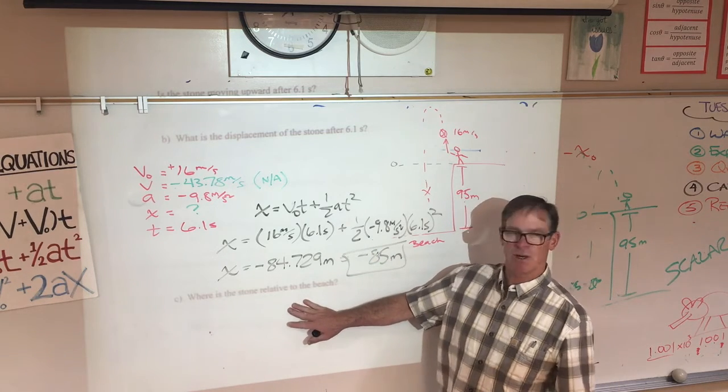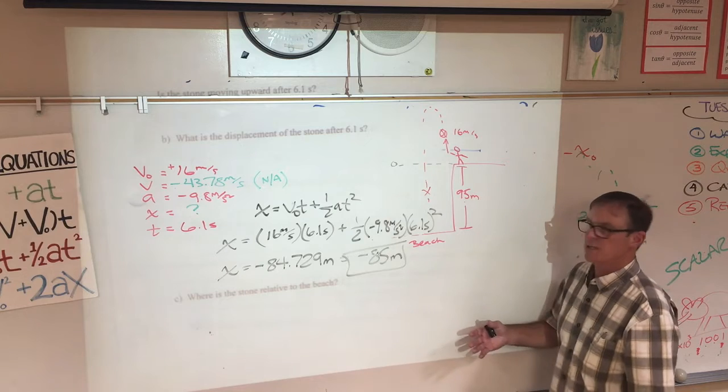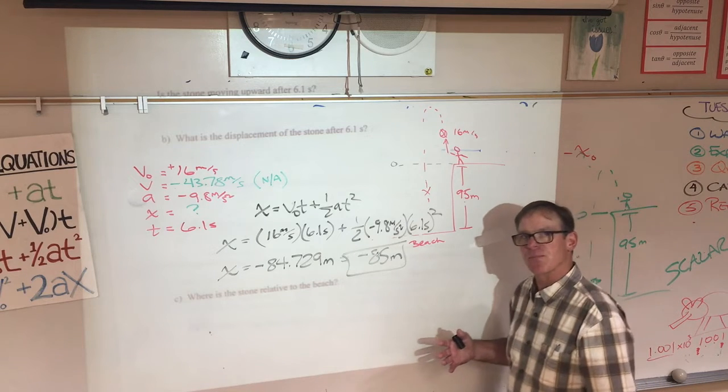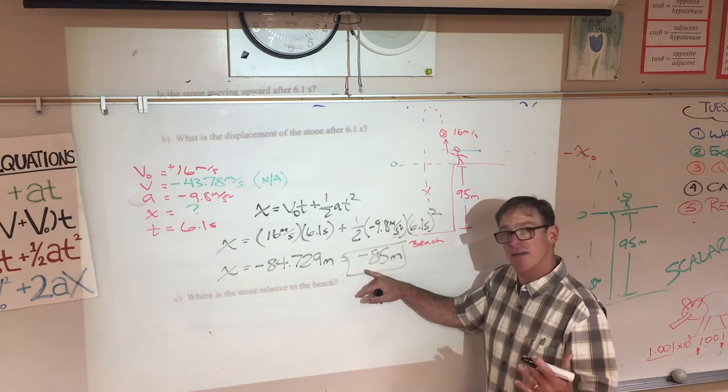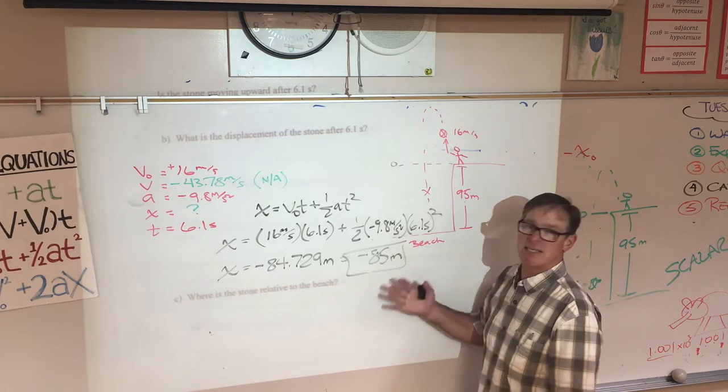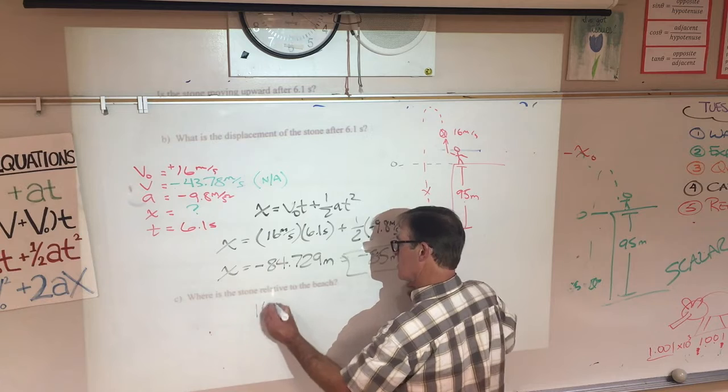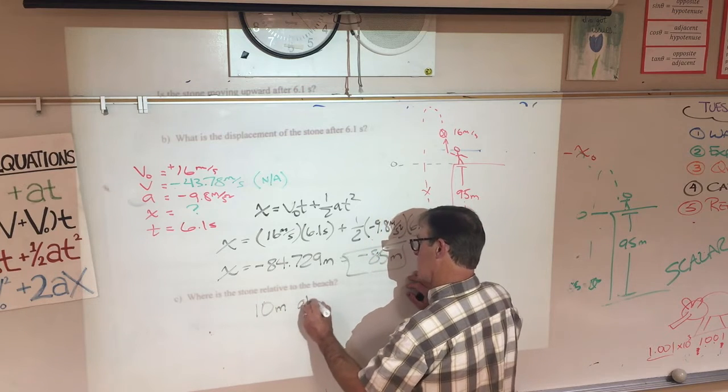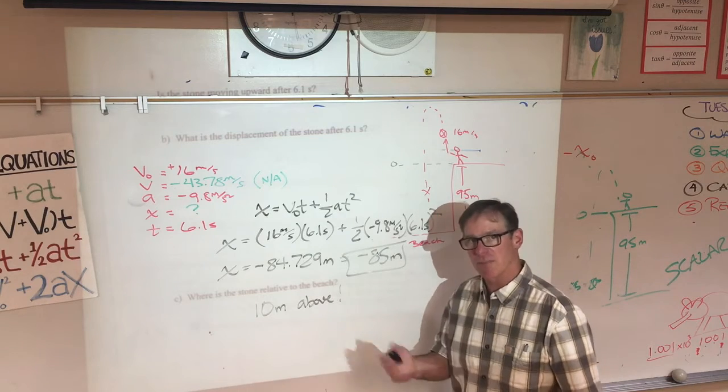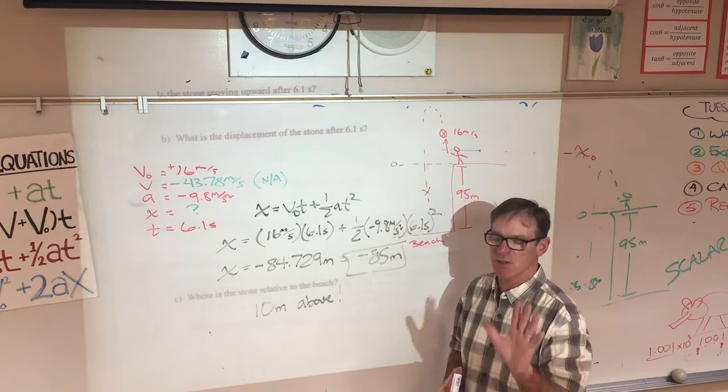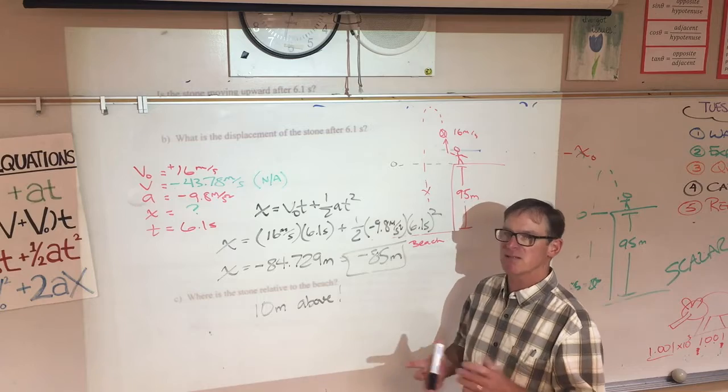So the last question, where is the stone relative to the beach? Think about that. The beach is 95 below the cliff. It has fallen 85 below the cliff. It must be 10 meters above the beach. I hope that was useful. I'm going to flip the paper over and quickly show you the new thing that I really am making this video for.